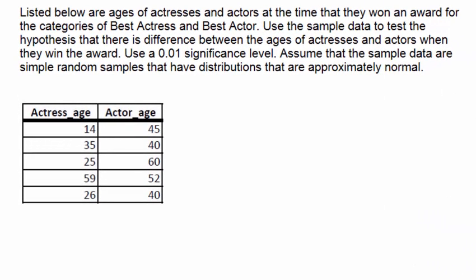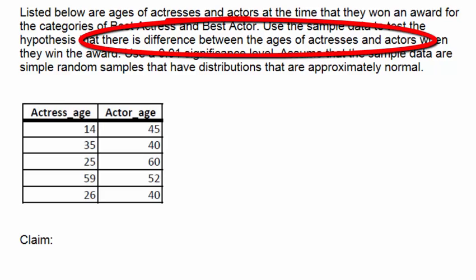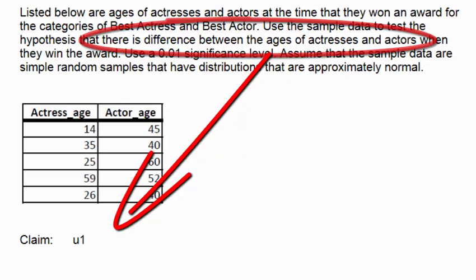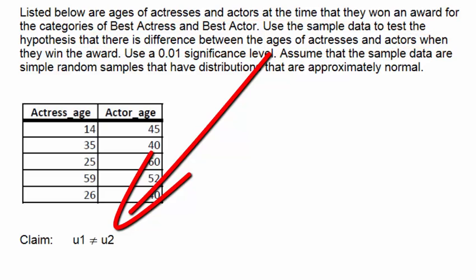To do this problem we will first follow the four steps in setting up a hypothesis test. We'll write the word claim and then decide what the claim is that we'll be testing. Since we would like to know if there is a difference in the average age of actresses and actors, we will test the claim that the average age of actresses is not equal to the average age of actors.